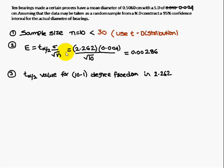Therefore t α/2 is 2.262 and the standard deviation is 0.04. He has given n value is 10, therefore error is 0.00286.